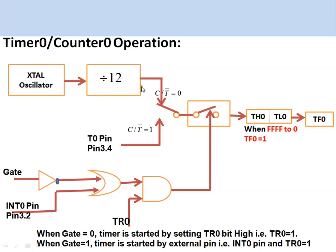When configured as a timer, Timer 0 receives its clock from the crystal oscillator divided by 12. For a 12 MHz crystal, this gives 1 MHz, meaning 1 microsecond pulses reach the timer. When the TR0 bit is set to 1 and the GATE bit is 0, the timer starts and the timer registers begin incrementing. When the count overflows from 0xFFFF to 0x0000, the overflow flag TF0 is set.